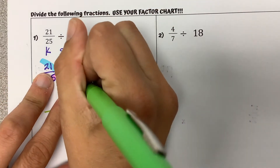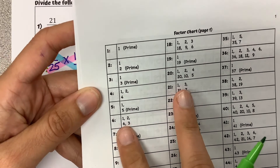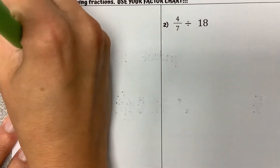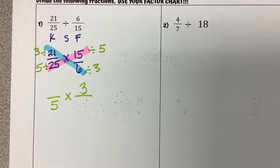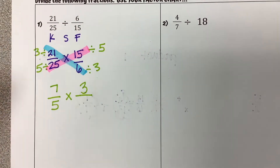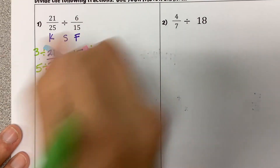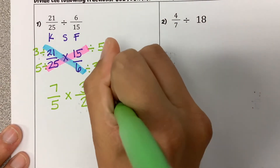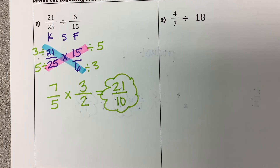Now doing the same thing for our other diagonal — finding the GCF of 21 and 6. The highest number they both divide by is 3. So 21 divided by 3 is 7, and 6 divided by 3 is 2. Now that we've simplified, I'm just multiplying across for my answer: 7 times 3 is 21, and 5 times 2 is 10. That is our simplified answer. If you want to, you could turn that into the mixed number 2 and 1 tenth, but you don't have to.